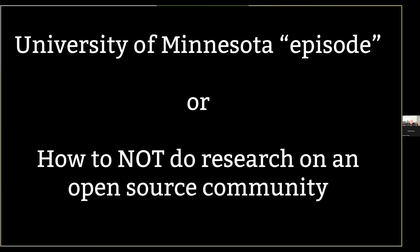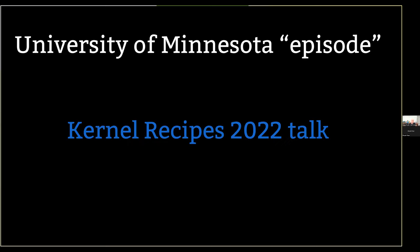This really came to light with the University of Minnesota episode, where they tried to submit patches that were purposely incorrect — and yet they sent correct patches at times. It was a very ironic episode. They lied about their research paper and did some other different stuff. It's basically how not to do research on an open source community. I gave a long talk about this — that's my Kernel Recipes talk. It walks you through what happened, how we audited everything, and how the kernel process has changed since then for researchers.